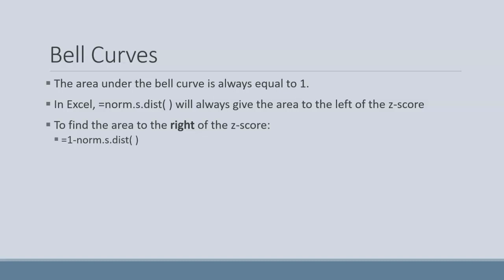then we need to do 1 minus norm.s.dist, because everything under that bell curve is equal to 1. So if we do 1 minus whatever is to the left, that's going to return to us the area to the right.